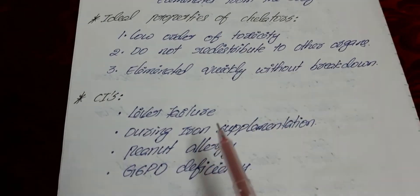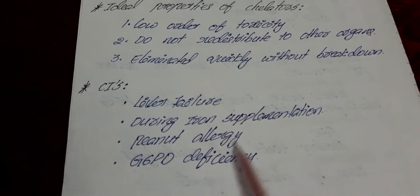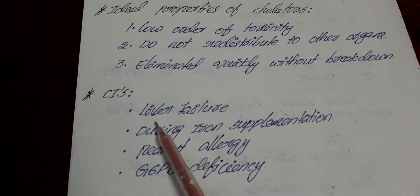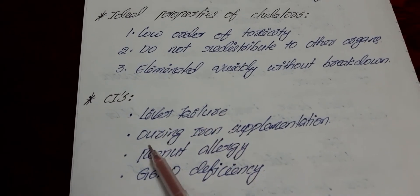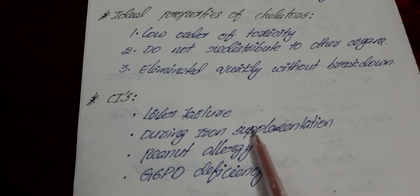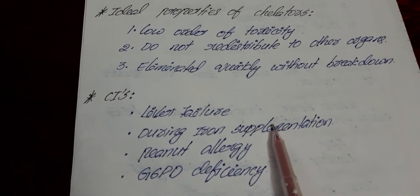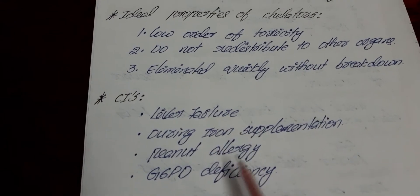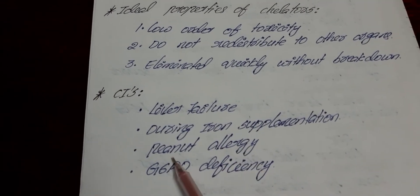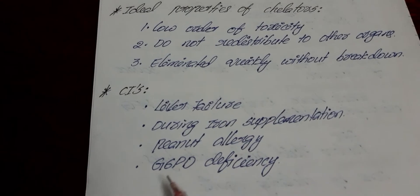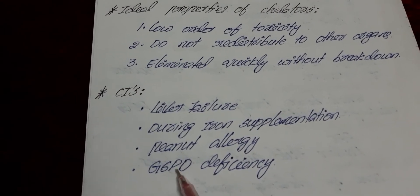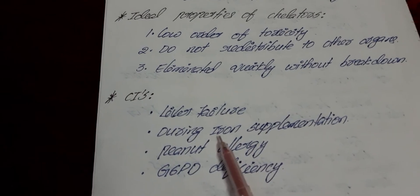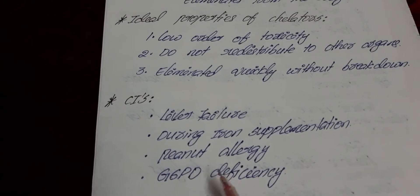The contraindications of chelating agents — conditions where we should not use chelation therapy — are: liver failure, during iron supplementation, peanut allergy, and glucose-6-phosphate dehydrogenase (G6PD) deficiency. In these four conditions we should not use chelation therapy.